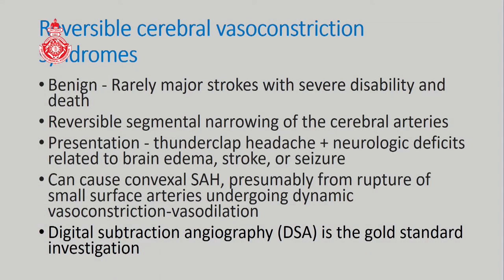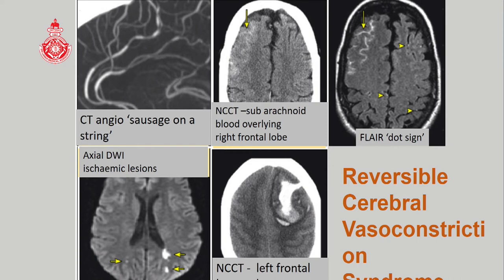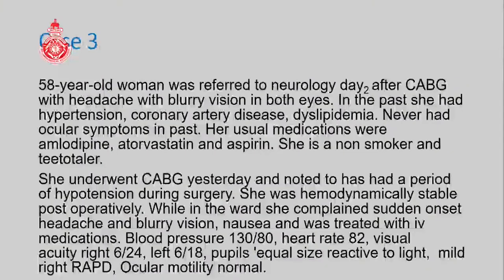Reversible Cerebral Vasoconstriction Syndrome is generally benign, though it can rarely cause strokes, disability, or even death. It involves reversible segmental narrowing of cerebral arteries, presenting with thunderclap headache and occasionally neurological deficits from brain edema or stroke, and can cause convex subarachnoid hemorrhage. Digital subtraction angiography is the gold standard. Imaging features include sausage-on-string appearance on arteriogram, FLAIR dot signs representing spasmodic arteries, and rarely infarcts or hemorrhages.